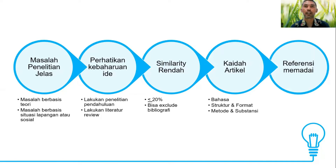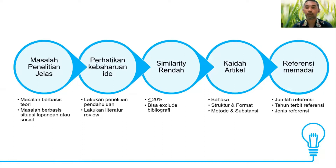Dalam beberapa artikel yang masuk di jurnal yang kami kelola, beberapa artikel harus kami tolak karena penggunaan referensi yang sangat sedikit — ada yang masuk dengan referensi kurang dari 20 referensi. Dari tahun terbitnya pun kurang memadai, lebih banyak menggunakan publikasi buku-buku dengan tahun yang lama. Tidak salah, apalagi di dalam kajian-kajian teologi, tetapi harus diimbangi dengan penggunaan referensi-referensi baru agar pembahasan tetap aktual.